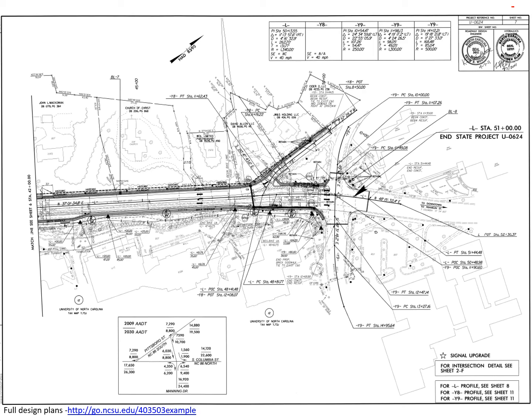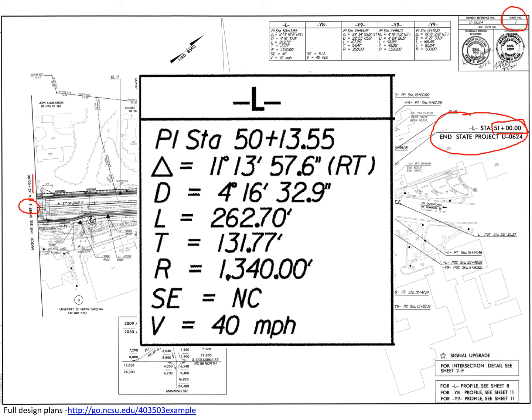Finally, on sheet seven — the last sheet in the alignment — the project ends at station 51. This ties into sheet six that ended at station 42. Here are the characteristics of the final curve with a PI at station 50 plus 13.55, which helped determine the final solution for the end station at station 51. This works through the basic given information and shows how it relates to an actual design plan, building understanding of horizontal alignment characteristics, curves, and tangents.